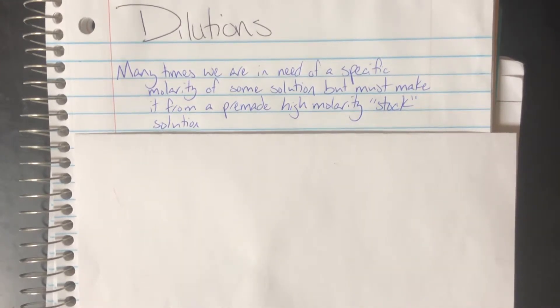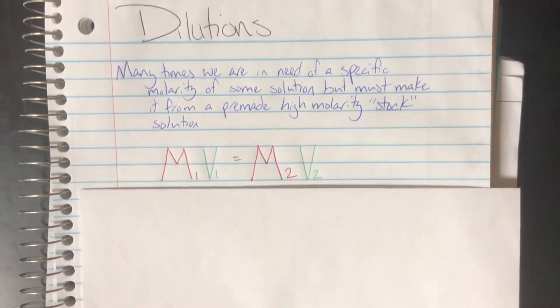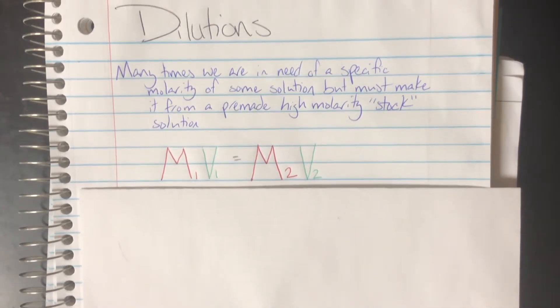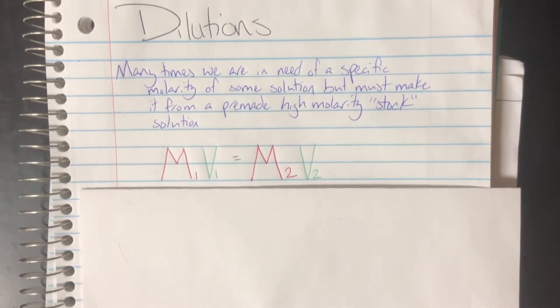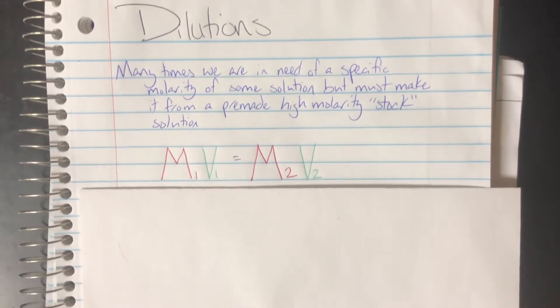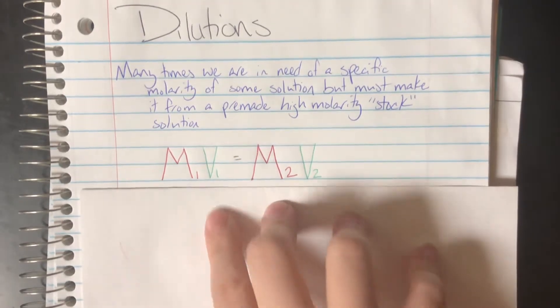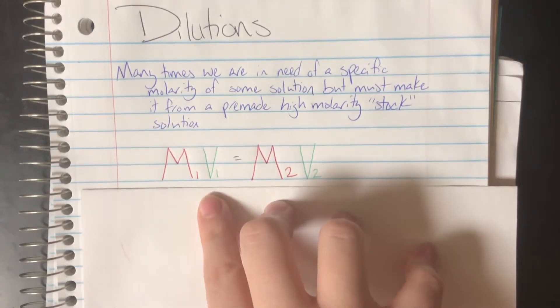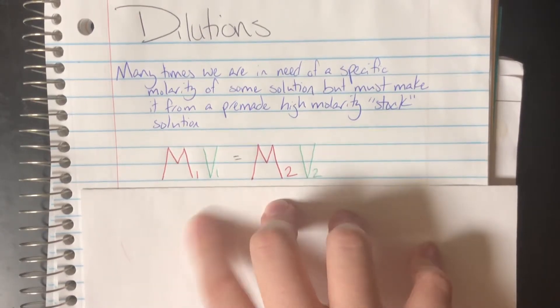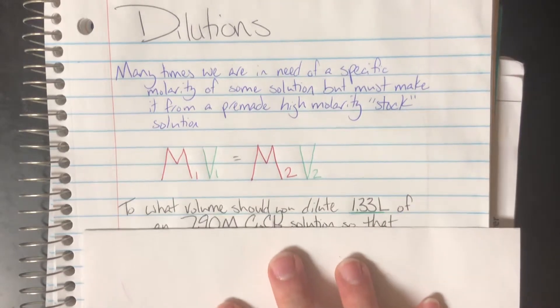And the dilution calculation is actually really easy, really quick, and that is going to be M1 times V1, or molarity 1 times volume 1, equals M2V2, or molarity 2 times volume 2. So with this relationship here, I can go ahead and figure out how much water I need to add, what my original molarity was, all that kind of stuff is just going to be from this very simple equation.